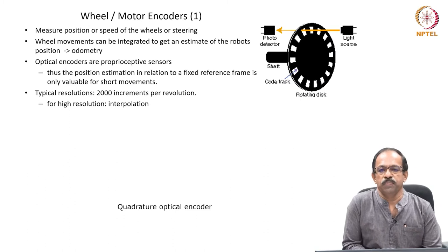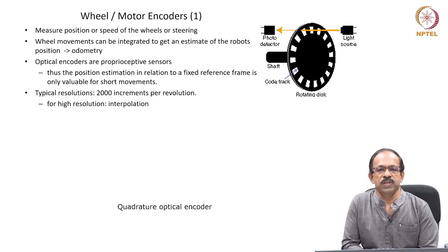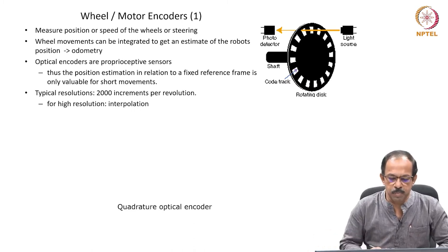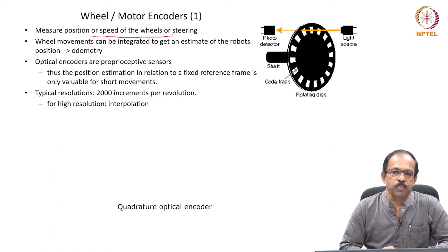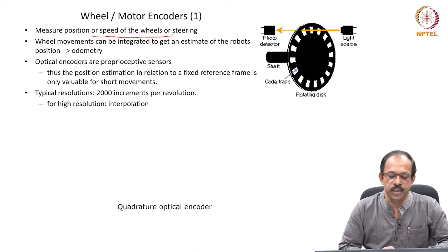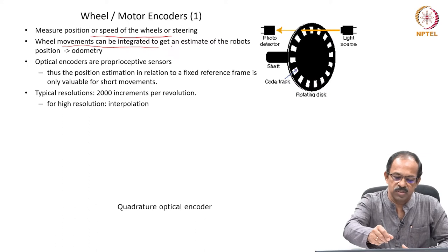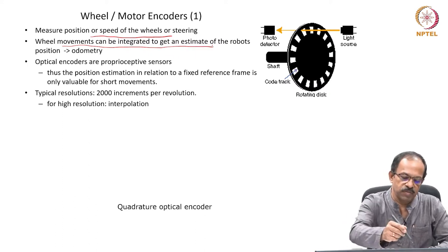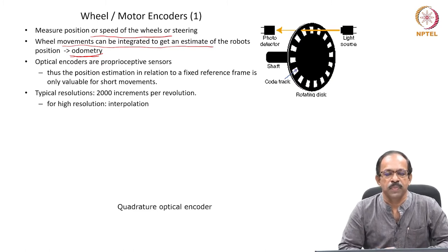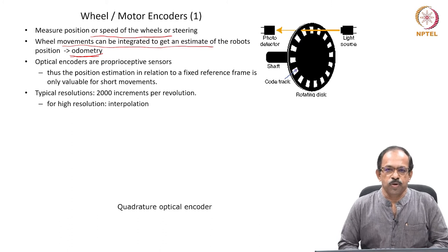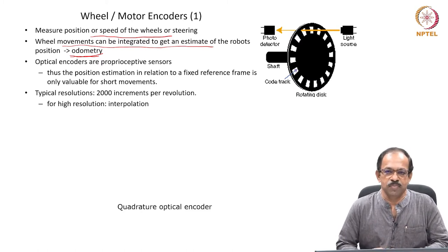Motor encoders are primarily used to get the position of the wheel or the speed at which the wheel is rotating — either the position or the speed can be measured using encoders. Normally, encoders are attached to the wheels in mobile robots so that we can identify the RPM of the wheel, use this RPM to find the distance traveled, and therefore locate the position of the robot. We can integrate wheel movements to get an estimate of the robot's position — this is normally called odometry. Commonly used encoders are optical encoders, and they are proprioceptive sensors, meaning they collect information from within the robot.